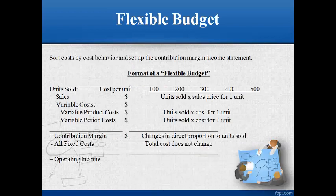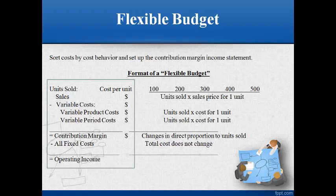The first step to preparing a flexible budget is to sort costs by variable and fixed and set up a contribution margin income statement. This is done on the left side. The next step is to write the per unit amount beside the sales, variable cost, and contribution margin.